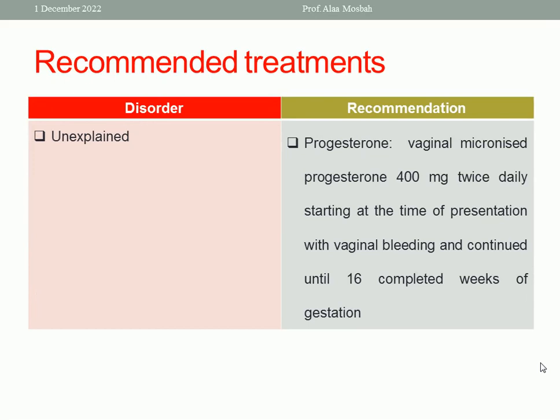For unexplained recurrent pregnancy loss: you can give vaginal micronized progesterone, 400 mg twice daily, starting at the time of presentation with vaginal bleeding, and continuing until 16 completed weeks of gestation.